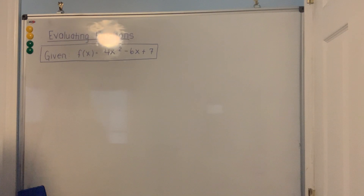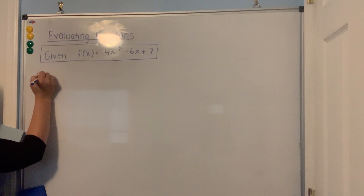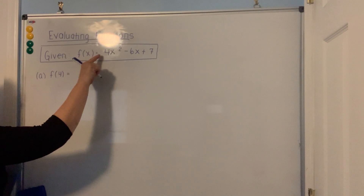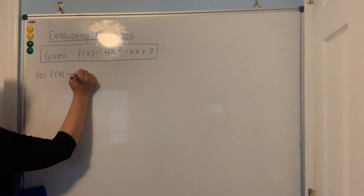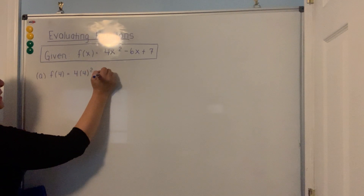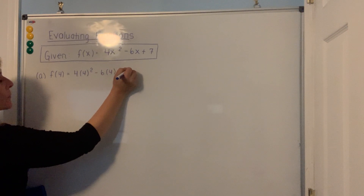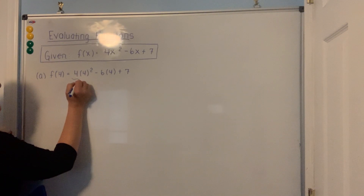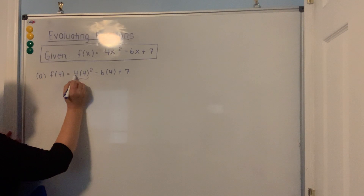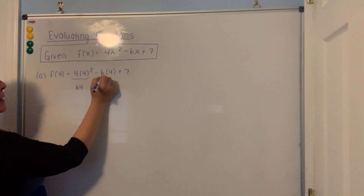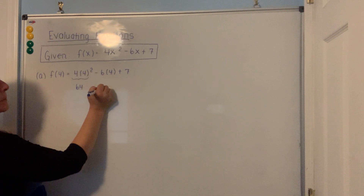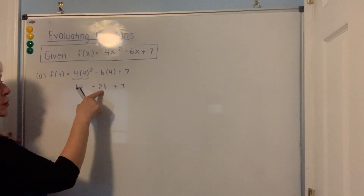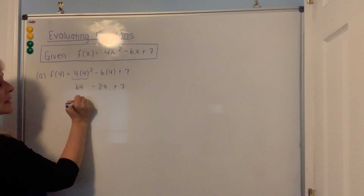Question number one says to find f of 4. F of 4 means fill in the number 4 for all the x's that show up on the right hand side. So 4 times 4 is 16, and 16 times the coefficient is 64. 6 times 4 is 24, and then there is that plus 7 at the end. 64 minus 24 is 40, plus 7 gives me 47 for an answer.